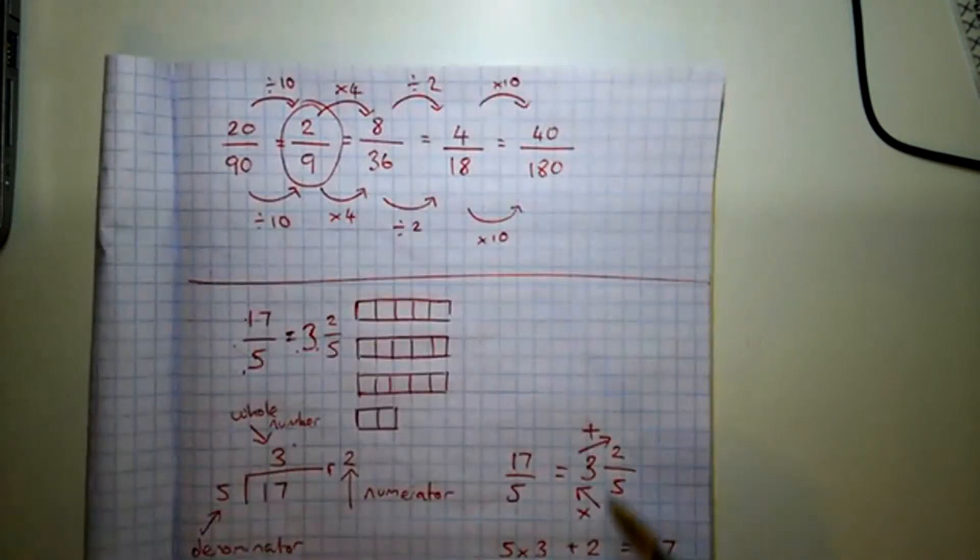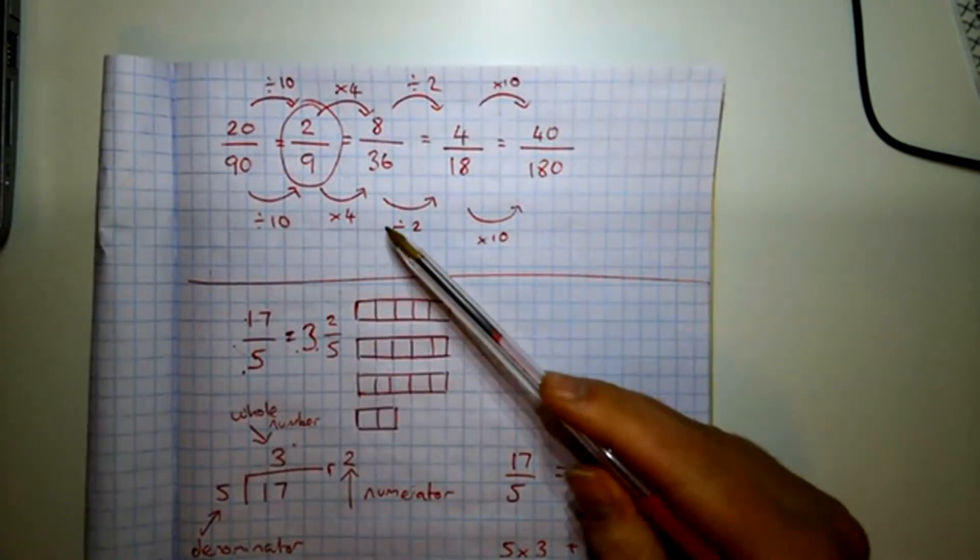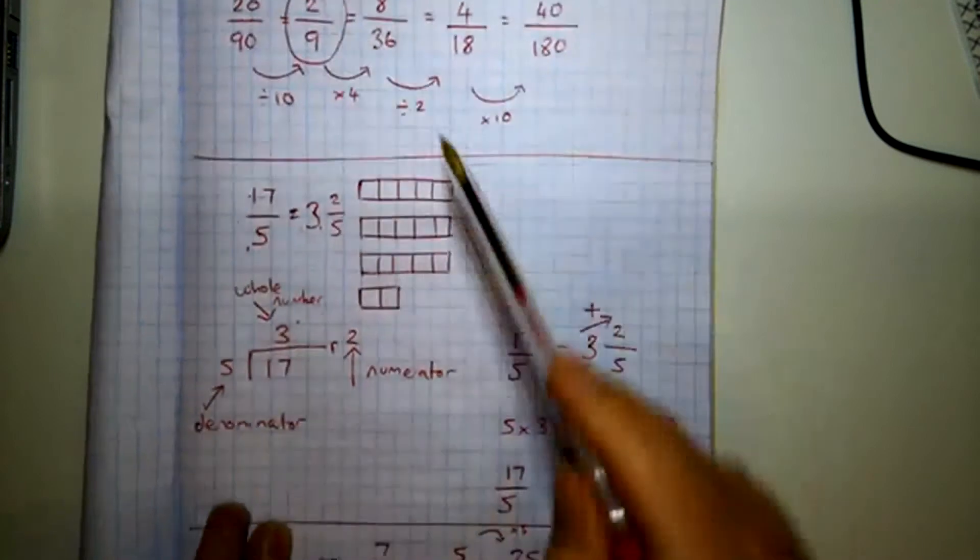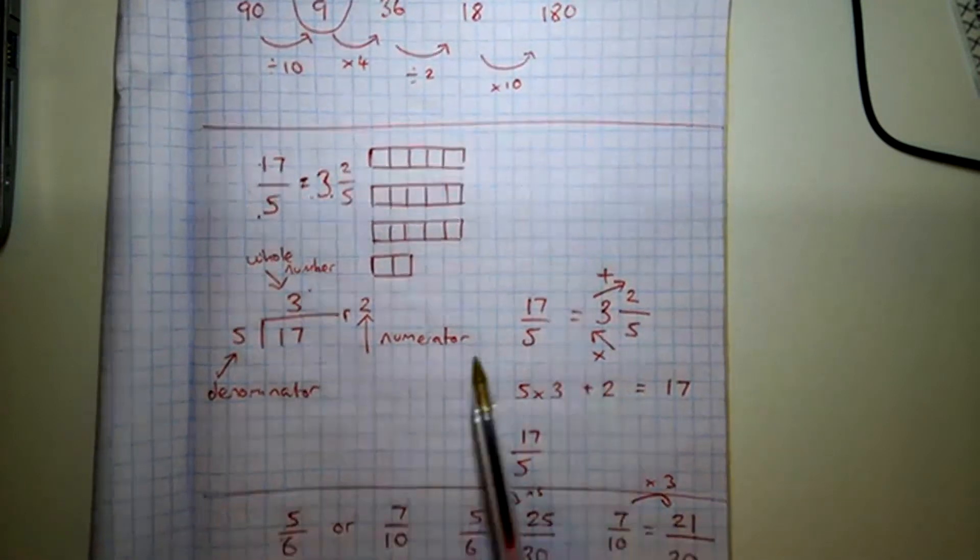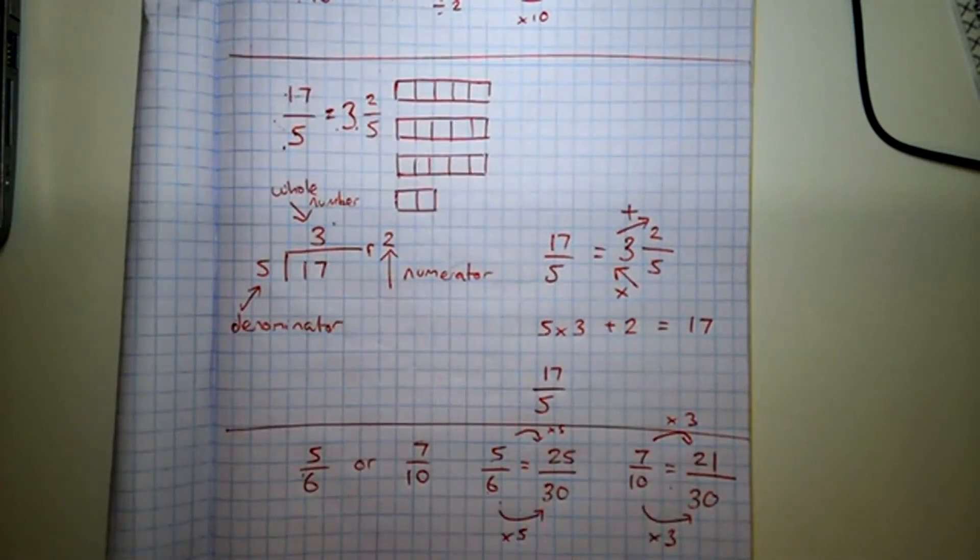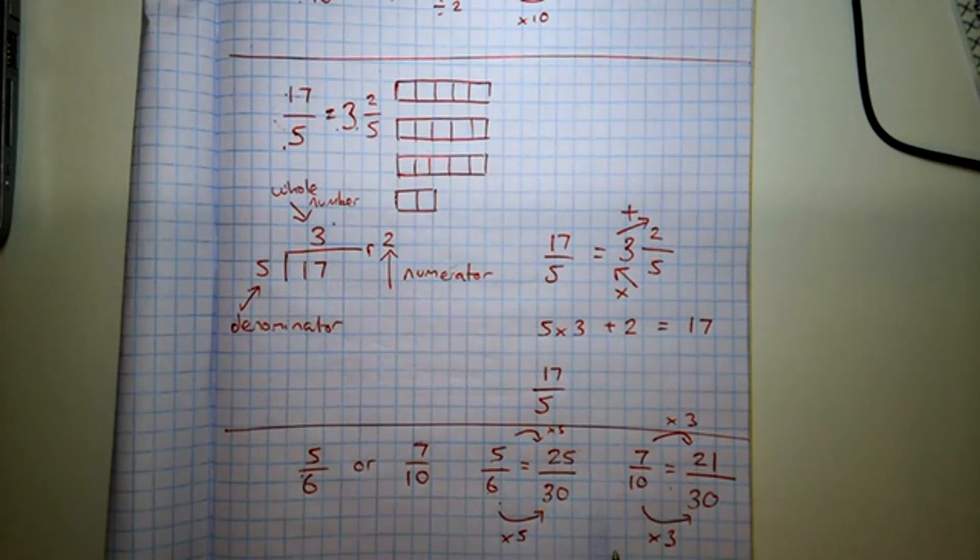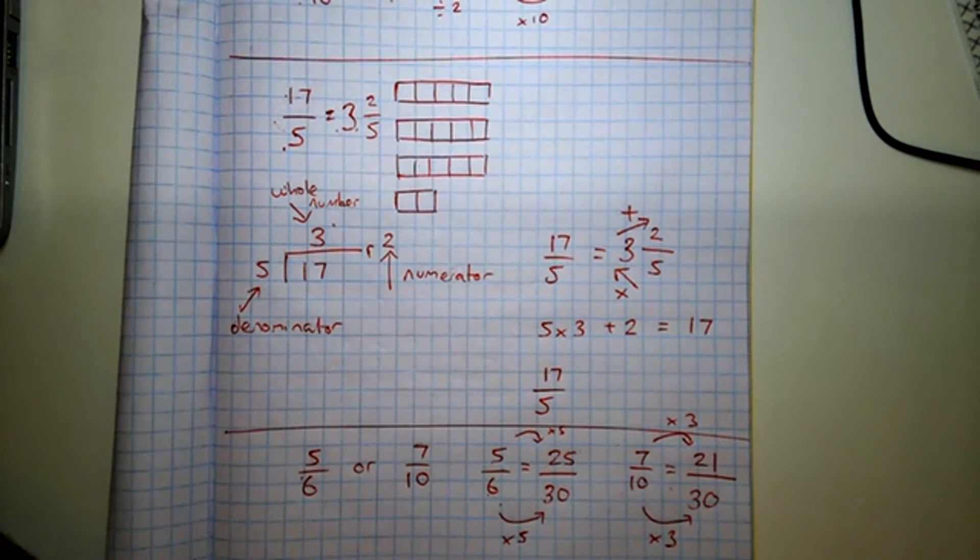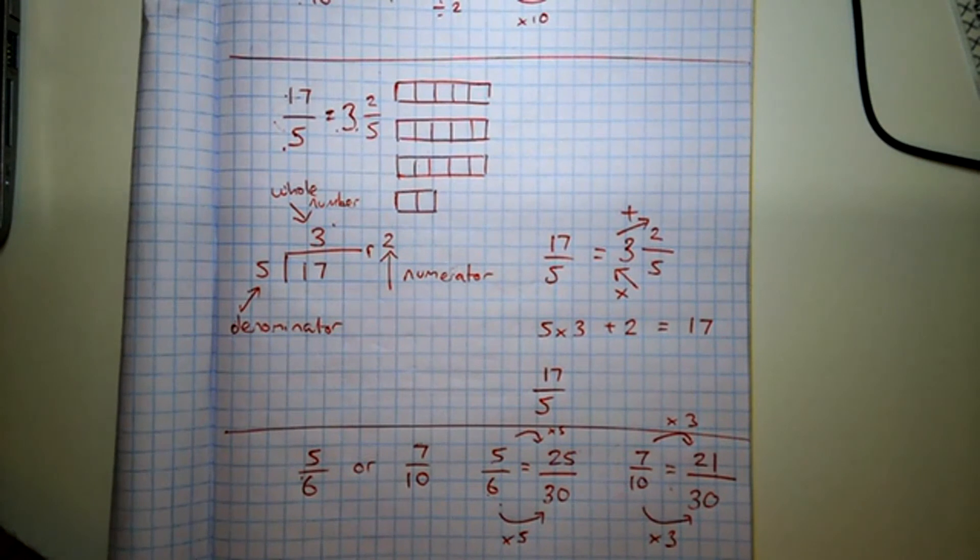So there's the three skills I'm hoping you take away from this. Equivalent fractions, including simplest form. Converting between mixed numbers and improper fractions. And comparing the size of fractions. So hopefully this has been helpful because you can pause it, go back over it, think about it and look at it as many times as you need to. So that is everything for today.